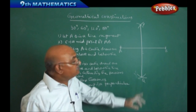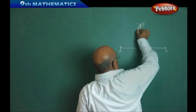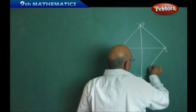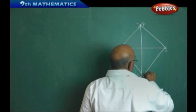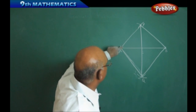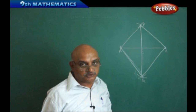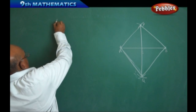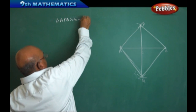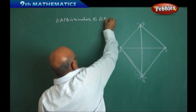Now the same thing we can extend further. If I join A and P, we get one triangle; joining other points gives more triangles. My main interest is to prove that triangle APB is similar to triangle AQB.